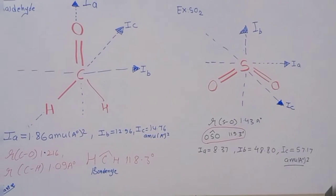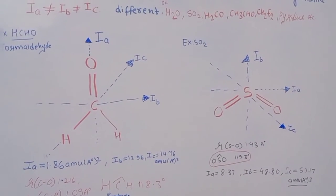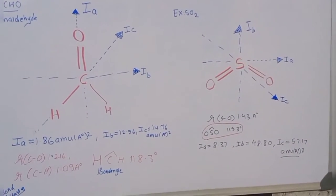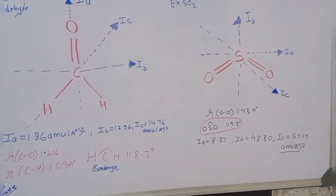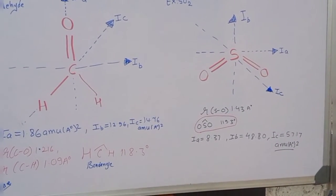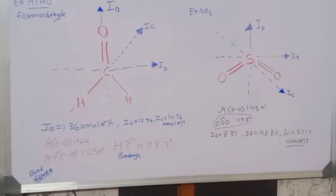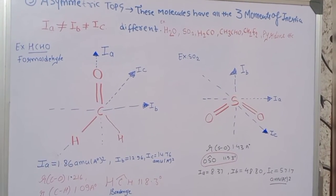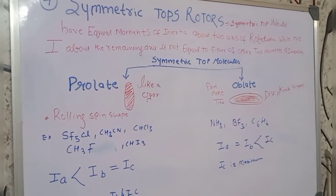For SO2, all three moments of inertia Ia, Ib, and Ic are also different. The bond length r(S–O) = 1.43 Å and the bond angle is 119.3°. The key characteristic of asymmetric top molecules is that all three moments of inertia have different values.